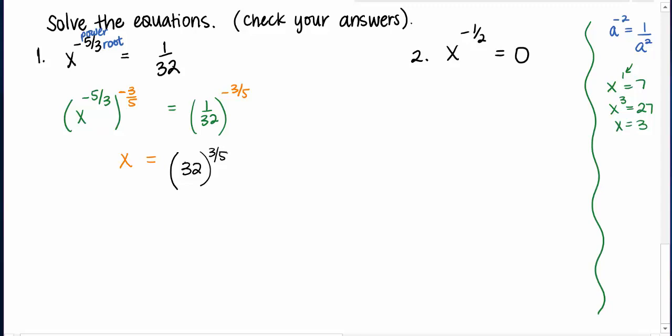We can certainly do this on our calculator. You have a caret button that looks something like this. Just make sure you put 3 fifths in parentheses. It will give you the answer. Or you can say the fifth root of 32 is 2 and we do know then what 2 to the 3rd is, so 8. So whether you put it in your calculator or evaluate it by hand you should be getting 8.